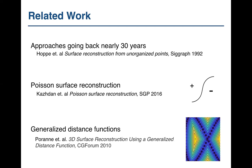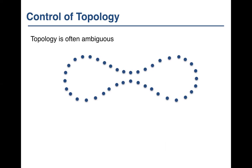The idea is that information encoded in the function tells us how to approximate the surface. We're going to build functions that approximate not only the geometry of the surface but also the correct or desired topology. This desire to control the topology of our output is really the differentiating feature of this work. Often, given just the point sample, topology can be ambiguous — consider this set of points near a dumbbell or figure eight; it's not clear what the topology should be.